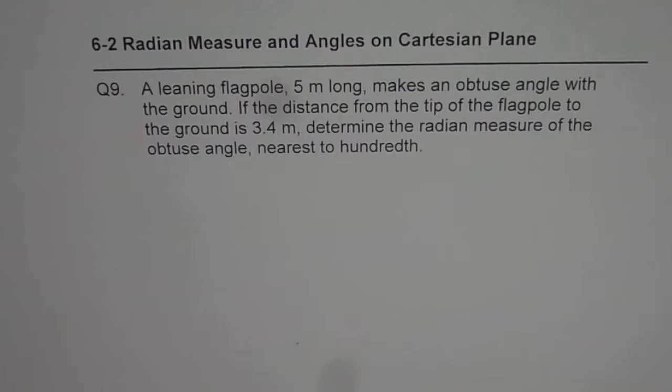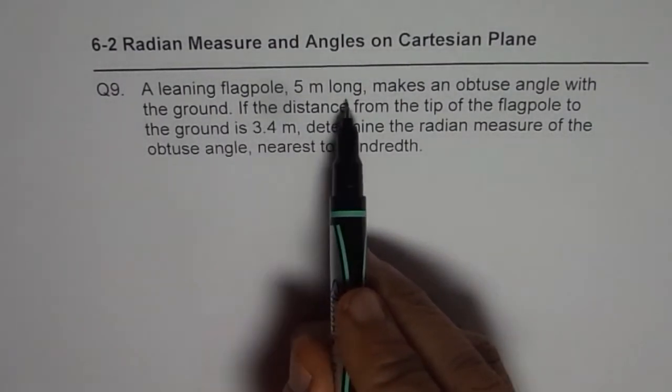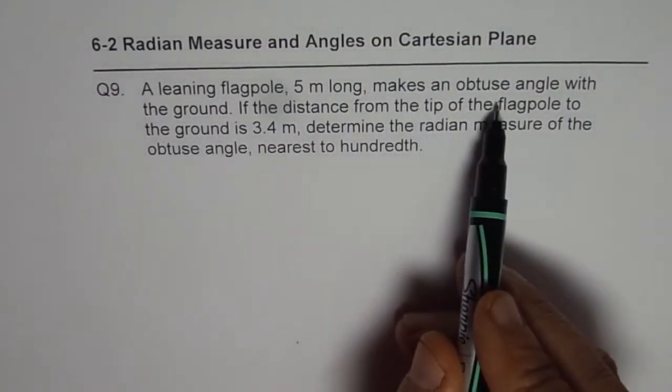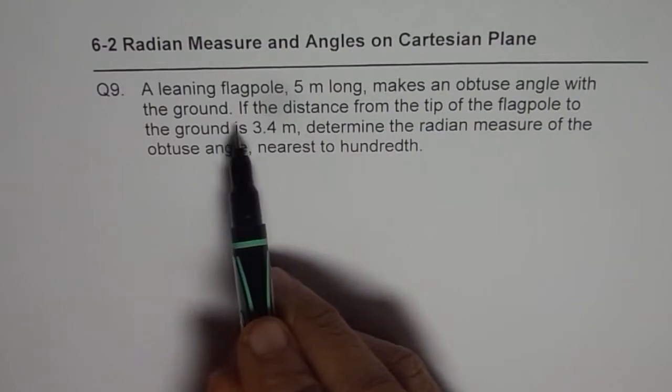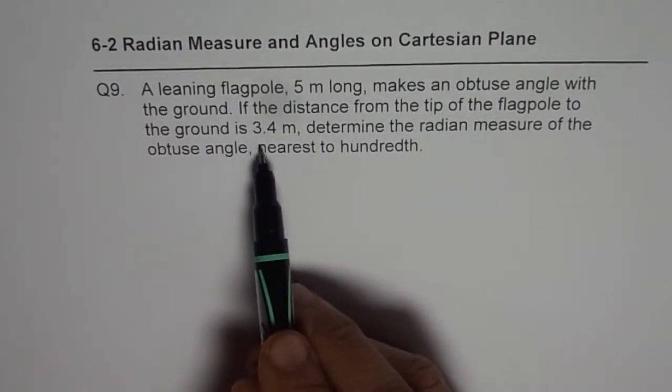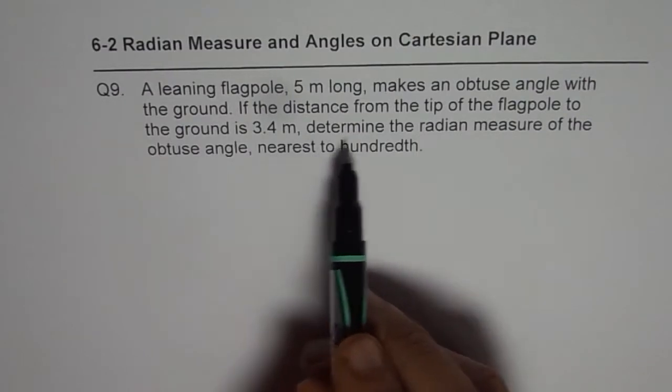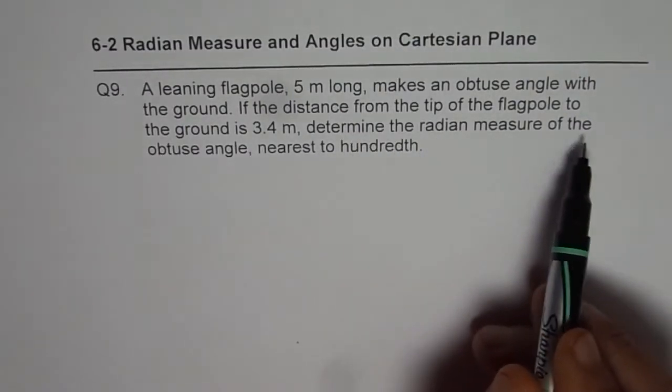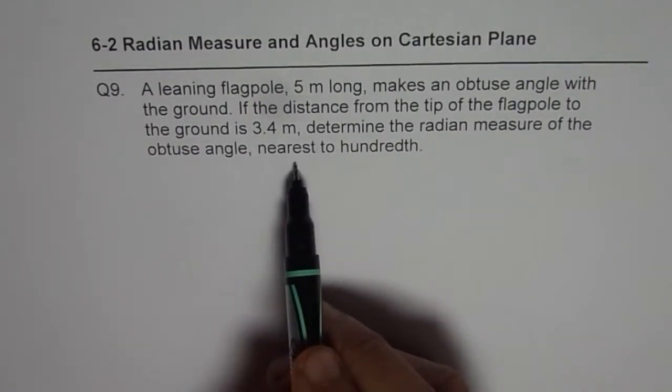Here is question number 9 as requested by my subscriber Ellen. A leaning flagpole 5 meters long makes an obtuse angle with the ground. If the distance from the tip of the flagpole to the ground is 3.4 meters, determine the radian measure of the obtuse angle nearest to hundredth.